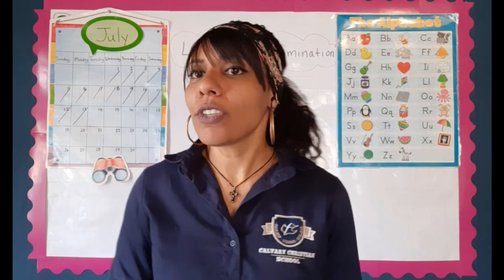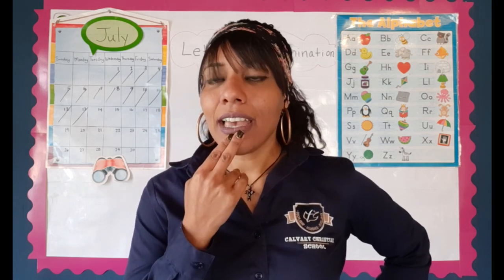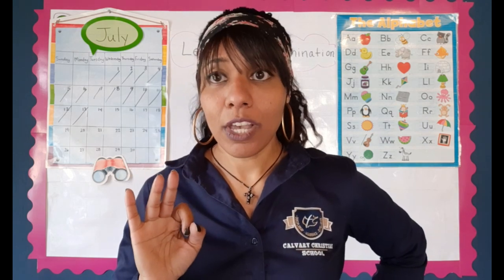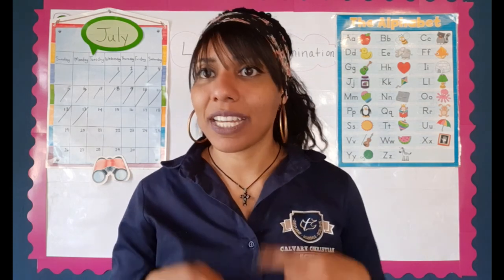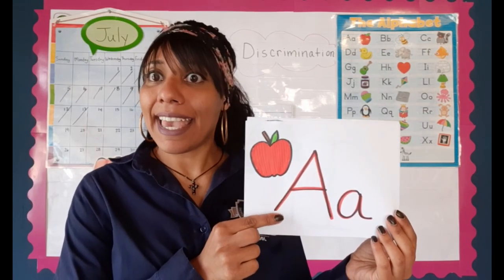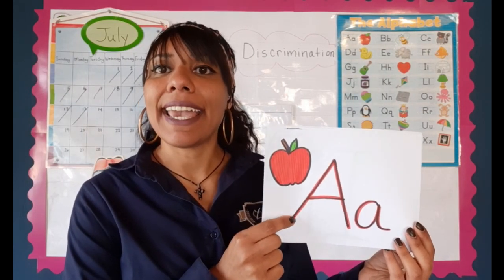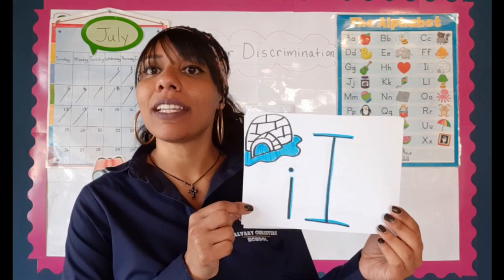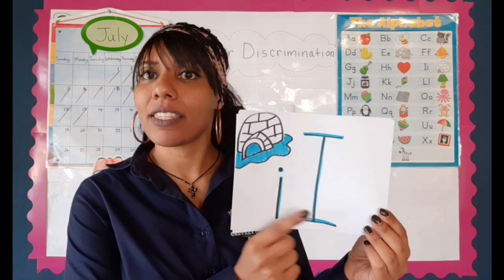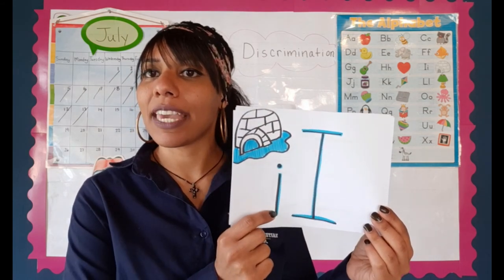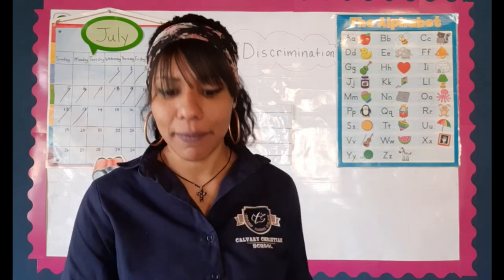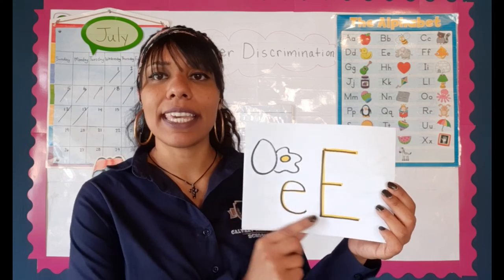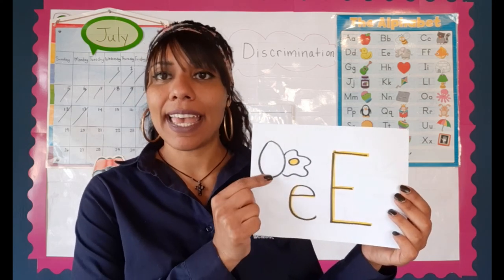There are also three other letters that we oftentimes get confused with — these are three of our vowels. We're going to go over them really quickly. The letter A — you see this beautiful apple. The next one is the letter I, for igloo — small case I and capital I. And the last one is the letter E — small case E and capital E for egg.